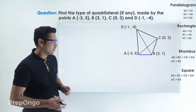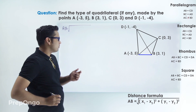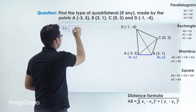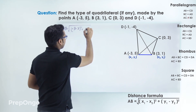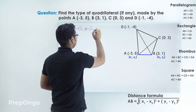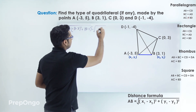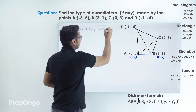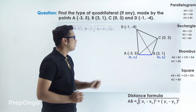Let's calculate AB first. Applying the distance formula: (minus 3 minus 3) squared plus (5 minus 1) squared. This gives (minus 6) squared plus (4) squared, which is 36 plus 16, giving root 52. Factorizing: root 52 equals root of 4 times 13, so AB equals 2 root 13.